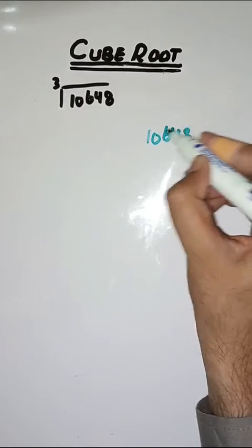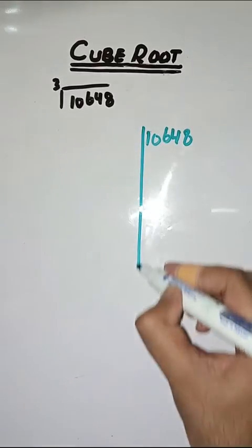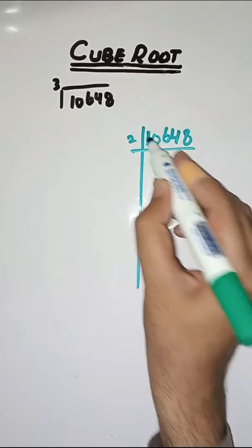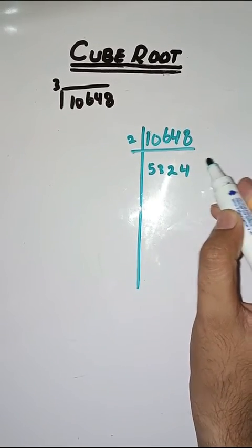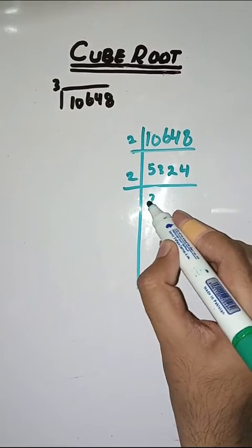So we start with 2 as it is an even number. 2 fives are 10, 2 threes are 6, 2 twos are 4, 2 fours are 8. Again with 2, 2 twos are 4, 13 twos are 26, 2 sixes are 12, 2 twos are 4.